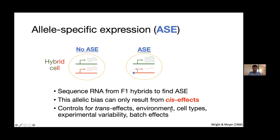Looking at ASE allows us to control for trans-acting effects as well as many other potential confounders — things like environmental differences between species, cell type abundances which can differ between species, and random experimental variability and batch effects. This is a nice method for doing a very precise comparison of only the cis-acting effects for all genes throughout the genome. This is not a new idea — it's been done since the 1960s — but what is new is the way we're using it to tell us about the genes underlying complex traits.